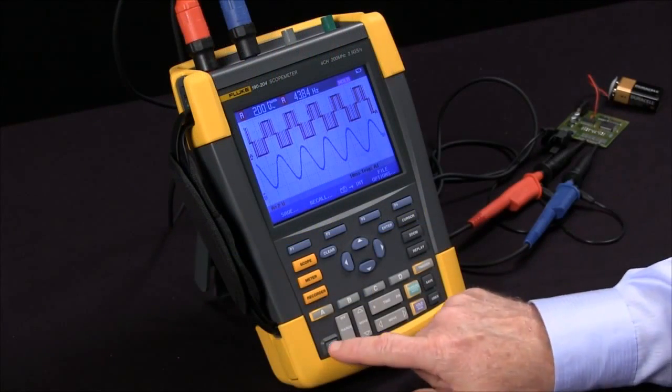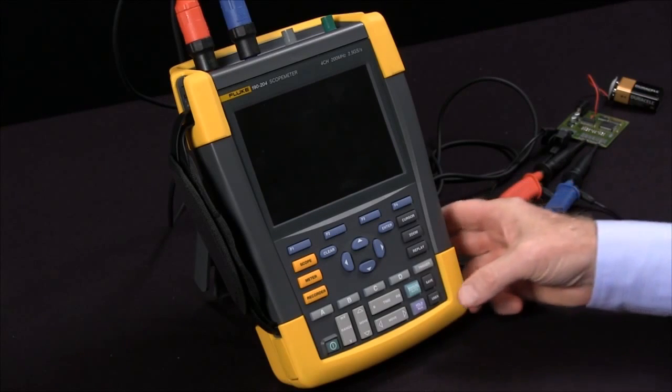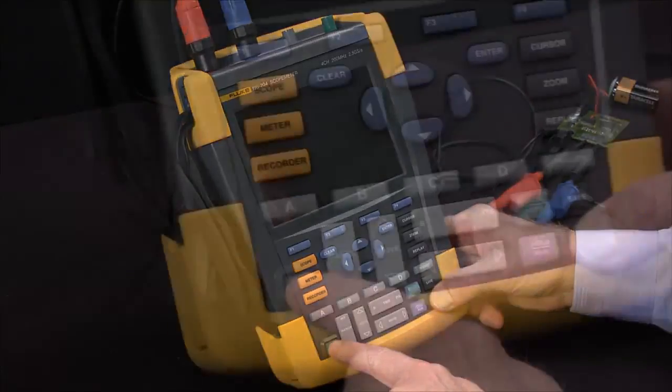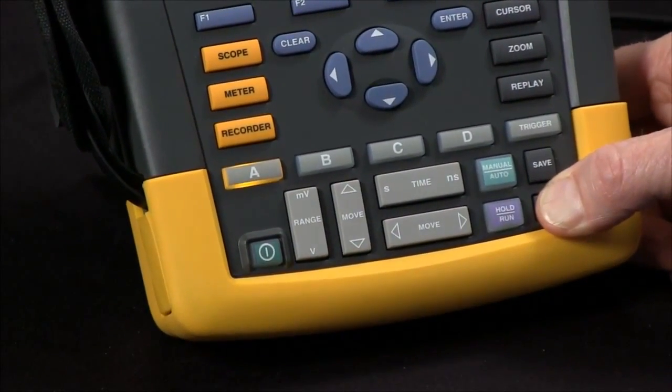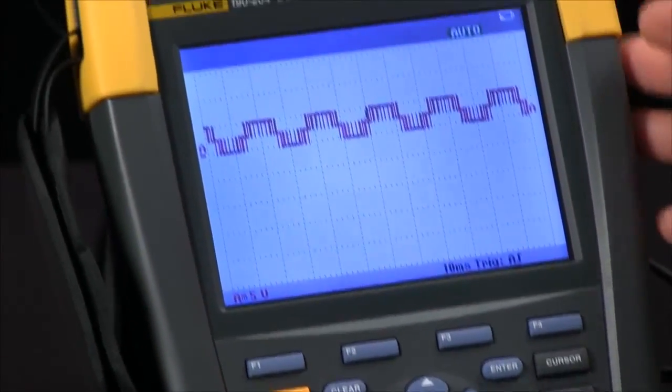I'm going to go ahead and turn the scope off and turn it back on with the factory defaults by holding the user key down. Hold the user button, press and release the power. The scope beeps twice, and it comes back with factory defaults.